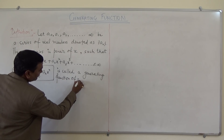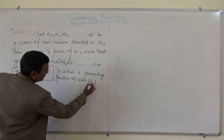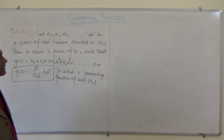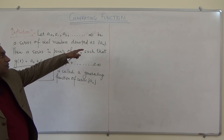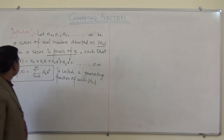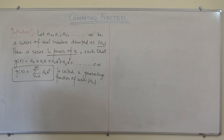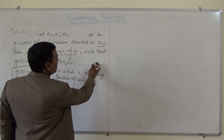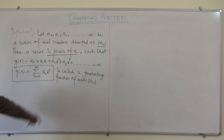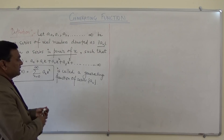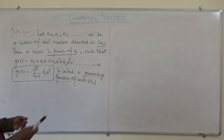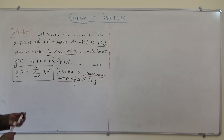So we have a₀, a₁, a₂ and so on to infinity — an infinite series of real numbers denoted as aₙ. Then a series in power of x such that G(x) equals a₀ plus a₁x plus a₂x² plus a₃x³ and so on, or G(x) equals the sum from n equals 0 to infinity of aₙxⁿ, is called a generating function of the series aₙ.